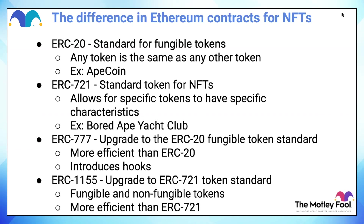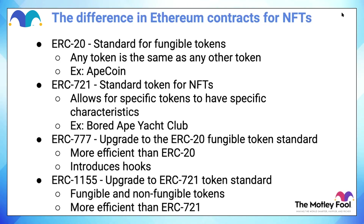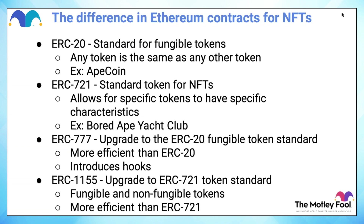Think about an ERC-20 contract being: I have a quarter, you have a quarter — if we swap quarters, we both have a quarter. They're the exact same thing, they have the same use, there is really no difference in one token versus another. This is the standard contract. Even the Ape Coin that just came out last week — one of the hottest things on the crypto market right now — they're using this ERC-20 contract for their token.